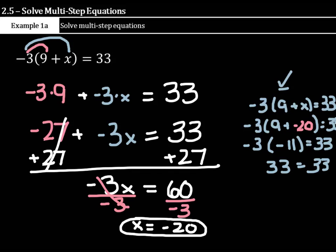So what did we do? First, we distributed the negative 3 to the 9 and the x. And then negative 3 times 9 is a negative 27. Negative 3 times x is negative 3x. And this here is a two-step equation. Then you solve it as such to get your answer x equals negative 20. Let's move on to another example very similar to this.